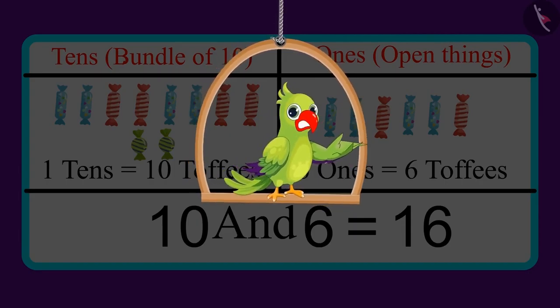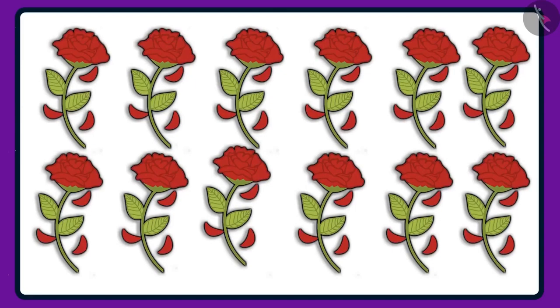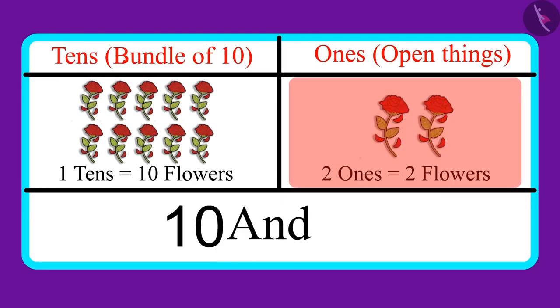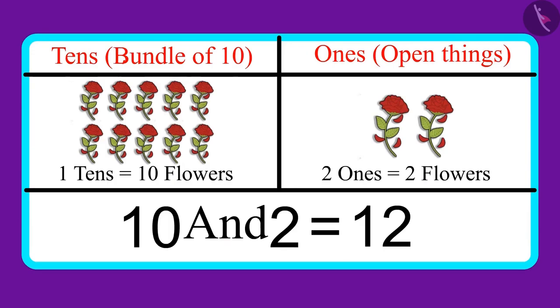Come on, let's look at another similar example. Here are some flowers. There are one tens and two ones in the number. Can you tell me how many flowers are these? One tens means ten flowers, and two ones means two flowers. Ten and two, which means these are twelve flowers.